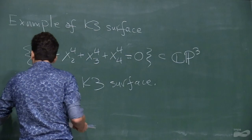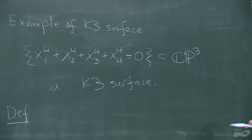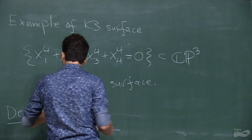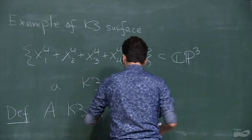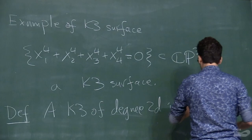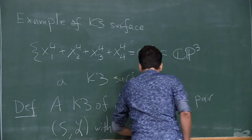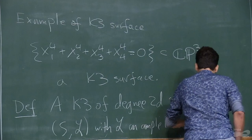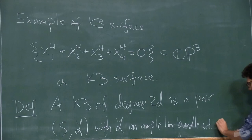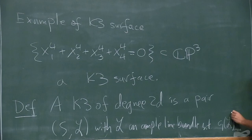We're going to be interested in K3 surfaces that can be embedded into a projective space. A K3 of degree 2D is a pair of a K3 surface and an ample line bundle L, such that if we take the first Chern class of the line bundle and take its self-intersection, we get 2D.